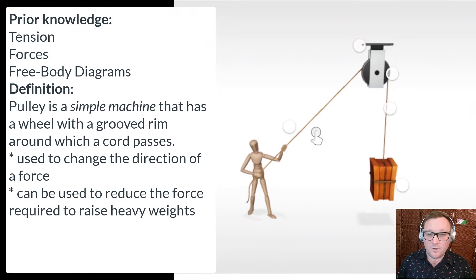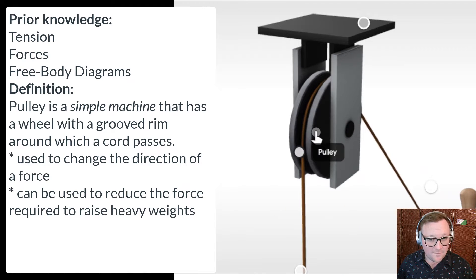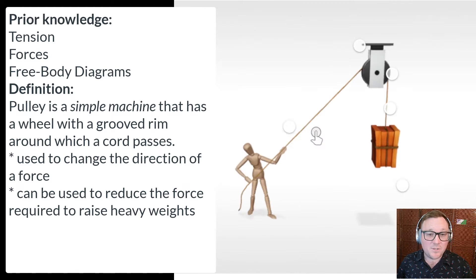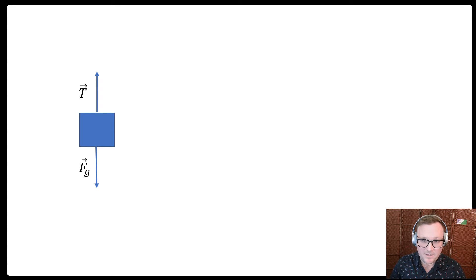It has a wheel with a grooved rim around which a cord passes. It can be used to change the direction of a force, and it can be used to reduce the force required to raise heavy weights. Let's think about that first part. It can be used to change the direction of a force.